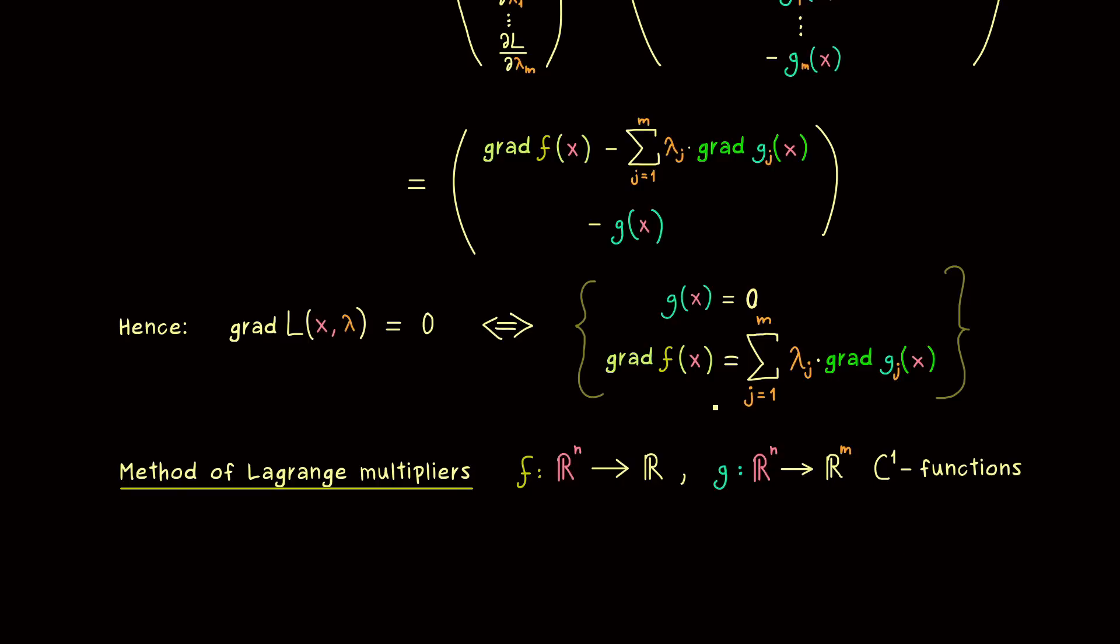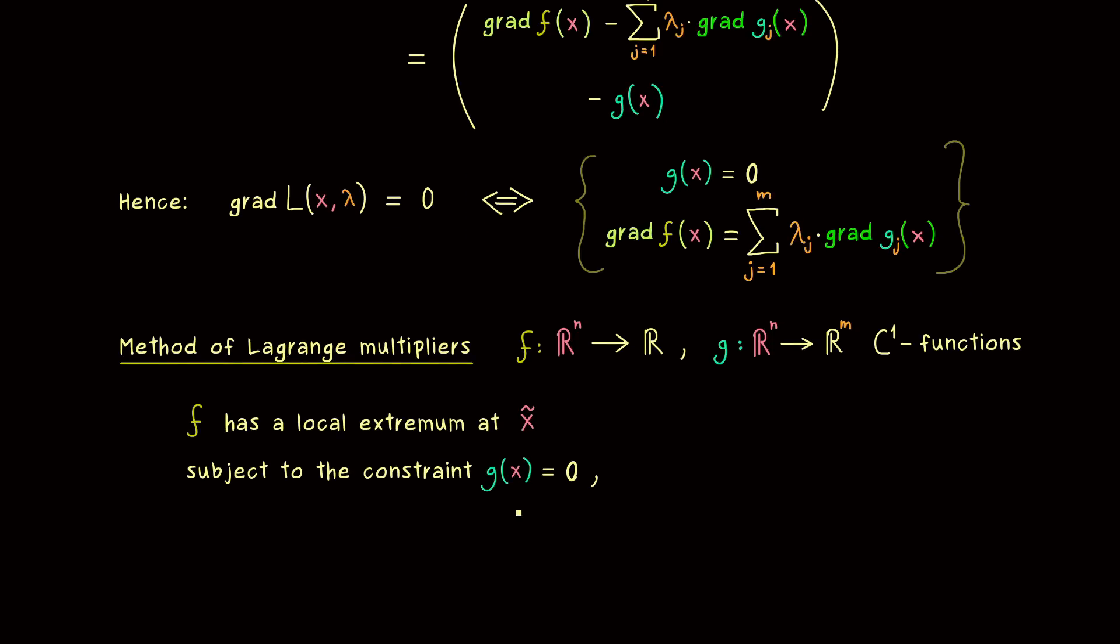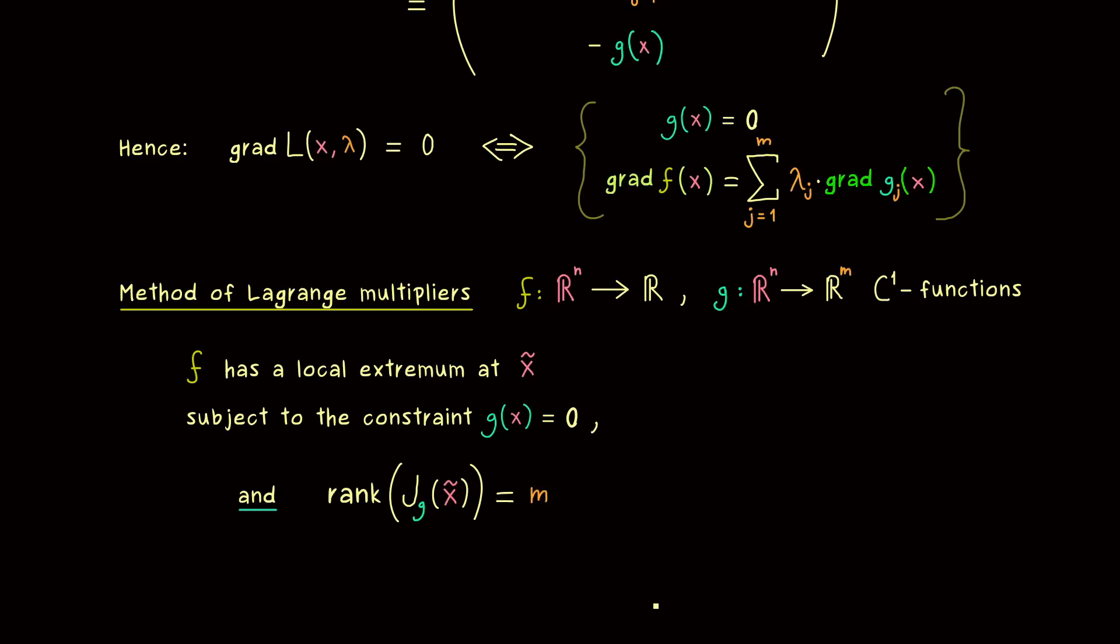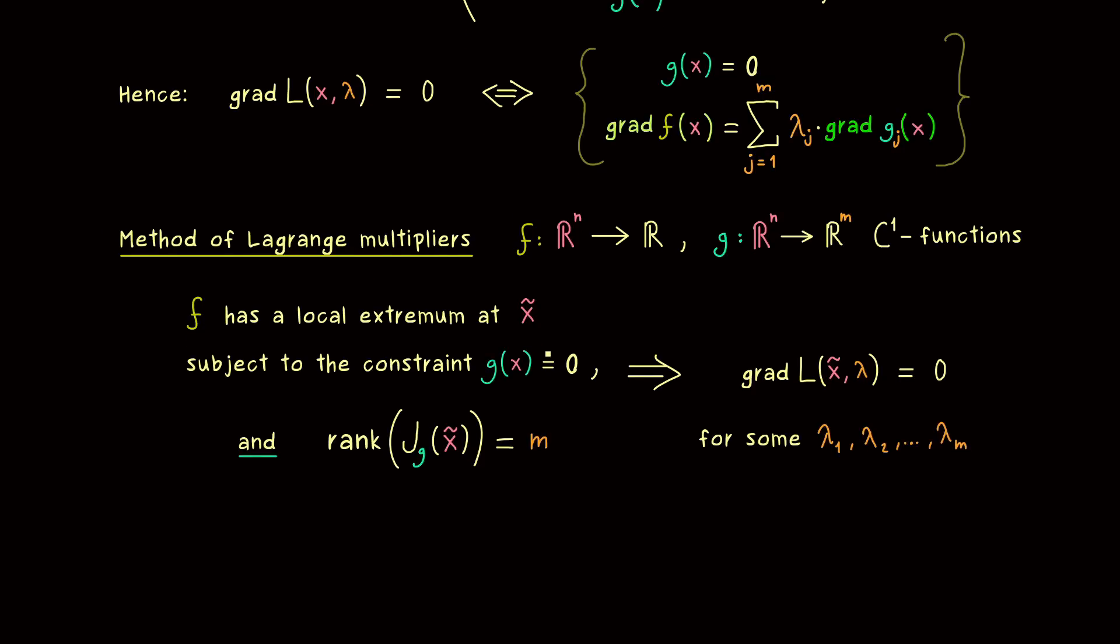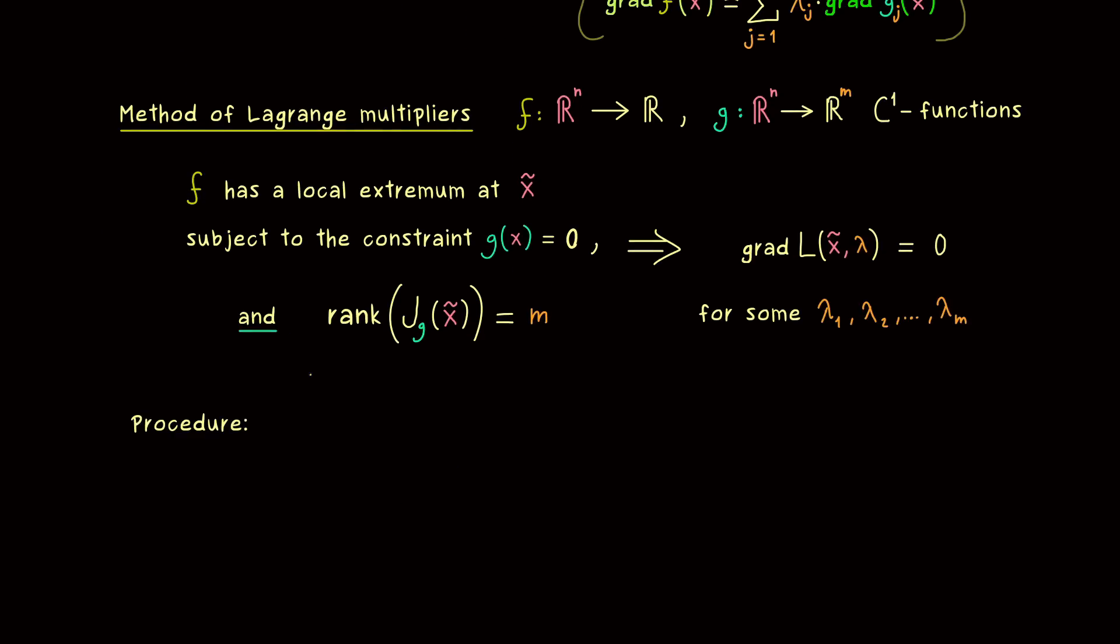We have two C¹ functions given: f from ℝⁿ to ℝ, and g maps ℝⁿ into ℝᵐ. We search for local extrema of f under the constraint g equals zero. We get a necessary condition for these if we also assume that the Jacobian of g gives a surjective map. This then implies that the gradient of the Lagrangean at the point x̃ equals zero. As we've shown before, we just have to find suitable Lagrange multipliers such that this equation is satisfied. This is the method of Lagrange multipliers where we use the Lagrangean function. This is the version you should remember, and it's helpful to have a procedure in mind.